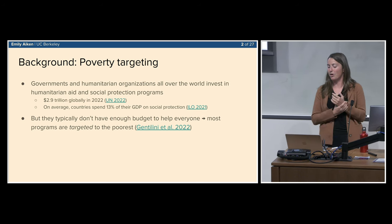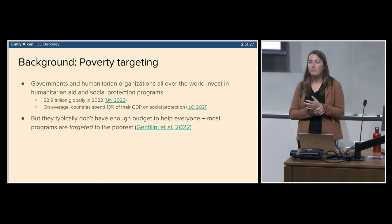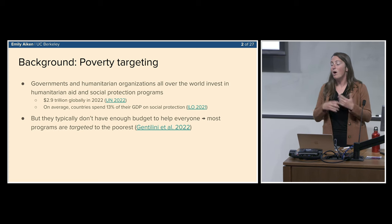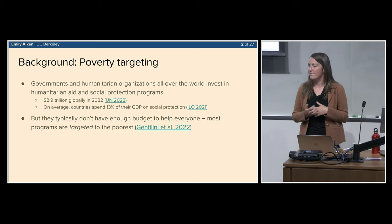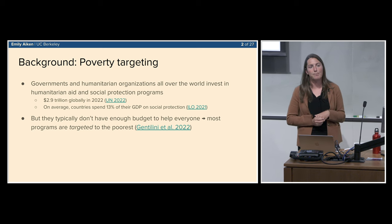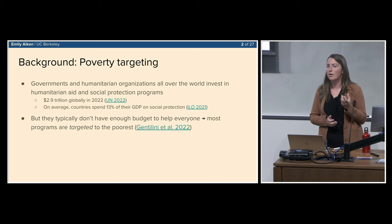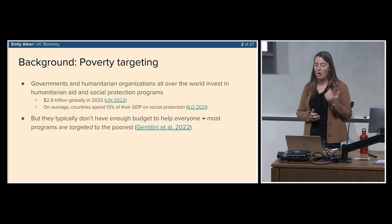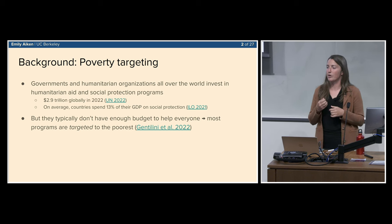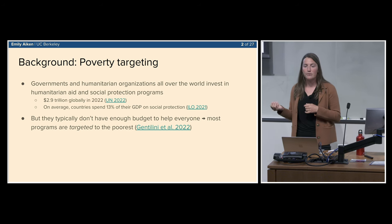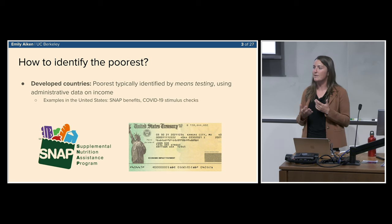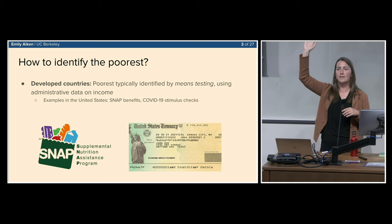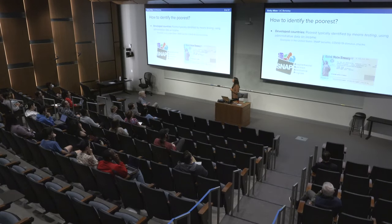Many people probably haven't encountered this niche research area of poverty targeting before, so here's the broad motivation. Governments and NGOs all over the world want to run humanitarian aid programs — countries spend on average 13% of their GDP on humanitarian aid and social protection programs. But they don't have enough budget to help everybody, so they need to do targeting: making sure benefits go to the poorest people and not to those who are less poor.